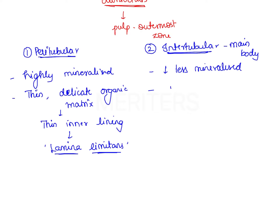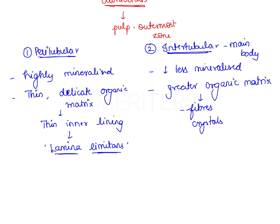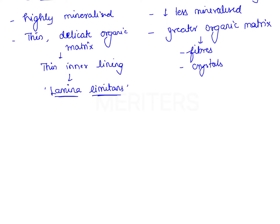Intertubular dentin consists of greater organic content — about one half of intertubular dentin is composed of organic matrix, which includes collagen fibers, hydroxyapatite crystals, etc. An important difference is that after decalcification, both the mineral and organic content of peritubular dentin are lost, whereas for intertubular dentin both contents are retained after decalcification.